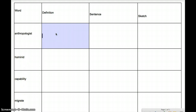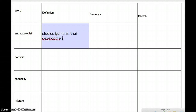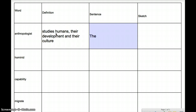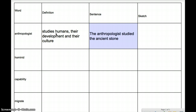Let's start off with anthropologist. What is an anthropologist? It's a person that studies humans, first and foremost, their development and their culture. That's essentially what an anthropologist studies. The anthropologist studied the ancient stone tools, because one of the important developments in human history was the creation of stone tools.